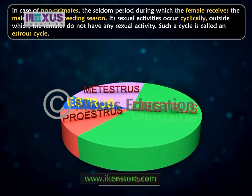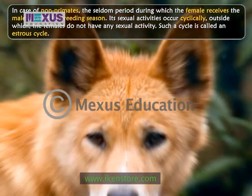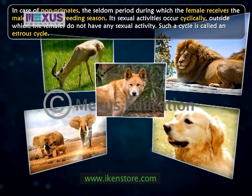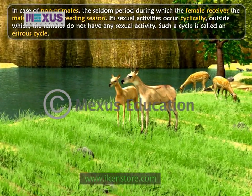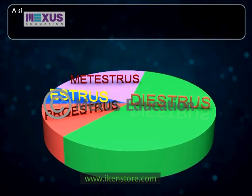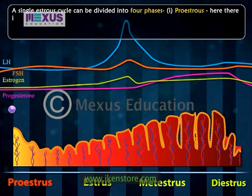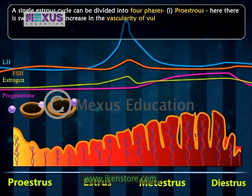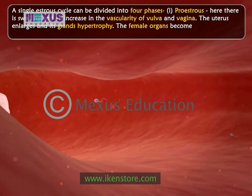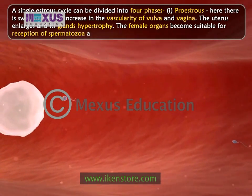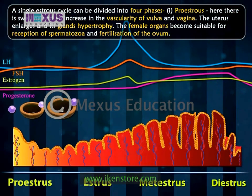The period between the two breeding seasons is known as anestrus. Some species might have one estrus cycle in one season while others might have several estrus cycles in one season. Their females accept the male partners only during the estrus. A single estrus cycle can be divided into four phases. During proestrus, there is swelling and an increase in the vascularity of the vulva and vagina. The uterus becomes enlarged and its glands hypertrophy, making the female organs suitable for reception of spermatozoa and fertilization of the ovum. The Graafian follicles in the ovary undergo maturation.